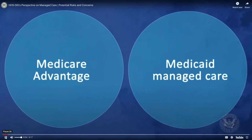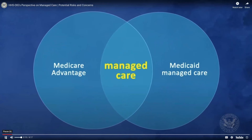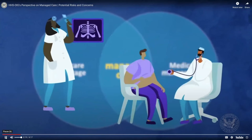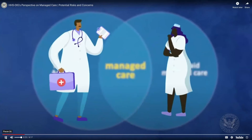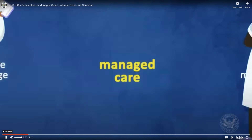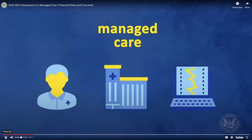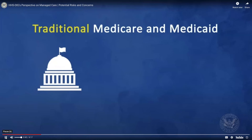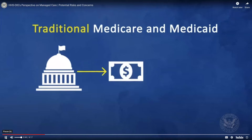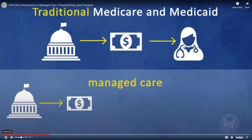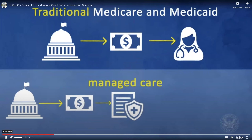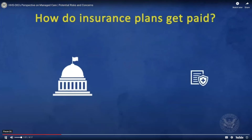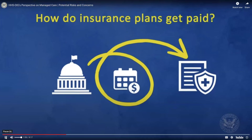Are you or a loved one enrolled in Medicare Advantage or Medicaid Managed Care? This is a service model called Managed Care, and millions of Americans in Medicare and Medicaid stand to benefit if Managed Care achieves its promise to deliver high-quality care more efficiently. In traditional Medicare and Medicaid, the government covers health care for seniors and individuals with disabilities by paying health care providers directly. In Managed Care, the government pays private health insurance plans to provide coverage, and the plans pay health care providers that care for enrolled patients. The government pays an insurance plan a fixed monthly payment to provide you coverage for health care benefits.